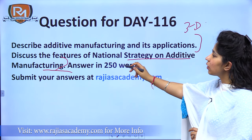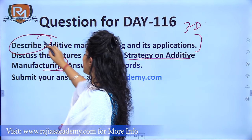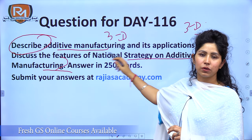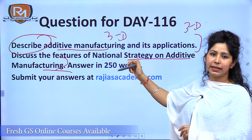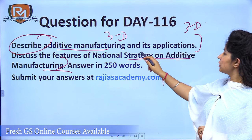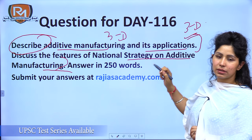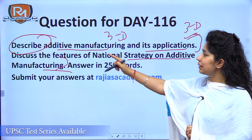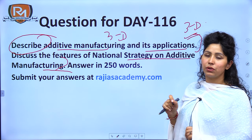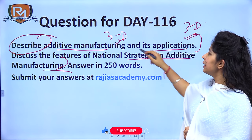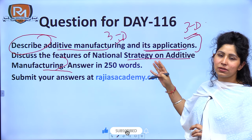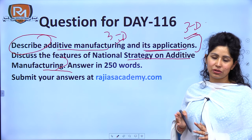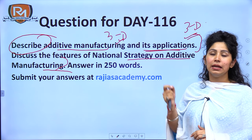The first part of the question asks to describe additive manufacturing, also known as 3D printing. The directive here is 'describe' — so you do not just have to define and give applications straight away. You need to explain 3D printing in a lot of detail, adding other relevant parts as well.